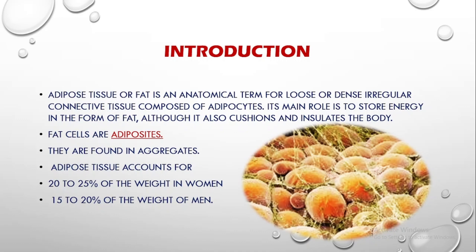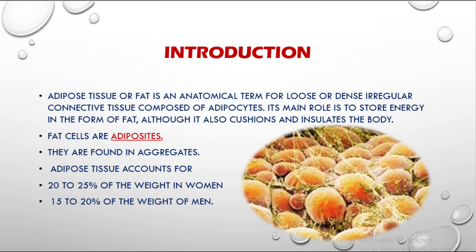Adipose tissue is actually a very loose connective tissue and it is made up of adipocytes. These adipocytes are nothing but fat cells and their main role is to store fat in the form of energy. It also gives proper cushioning to the body and provides heat to the body. As you can see here, fat cells or adipocytes are always found in clusters, in aggregates together in a bunch, and they are more in females than in men.